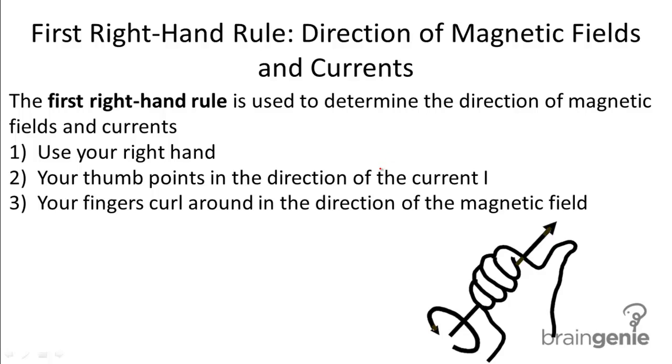As we use our right hand, our thumb will always point in the direction of the current I. The thumb determines the direction of I.